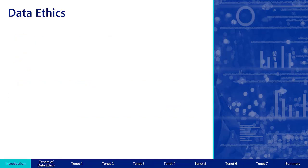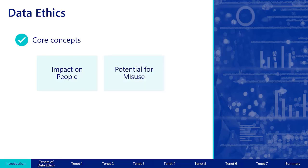The ethical use of data focuses on several core concepts. Impact on people: data represents characteristics of individuals and is used to make decisions that affect people's lives, so we must manage its quality and reliability. Potential for Misuse: we must prevent the misuse of data, because misusing data can negatively affect people and organizations. And Economic Value: because data has an economic value, it is imperative to determine how that value can be accessed and by whom.